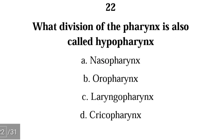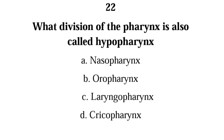Number 22. What division of the pharynx is also called hypopharynx? The correct answer is C, laryngopharynx. The laryngopharynx is the lowest part of the pharynx, so it is also called hypopharynx.